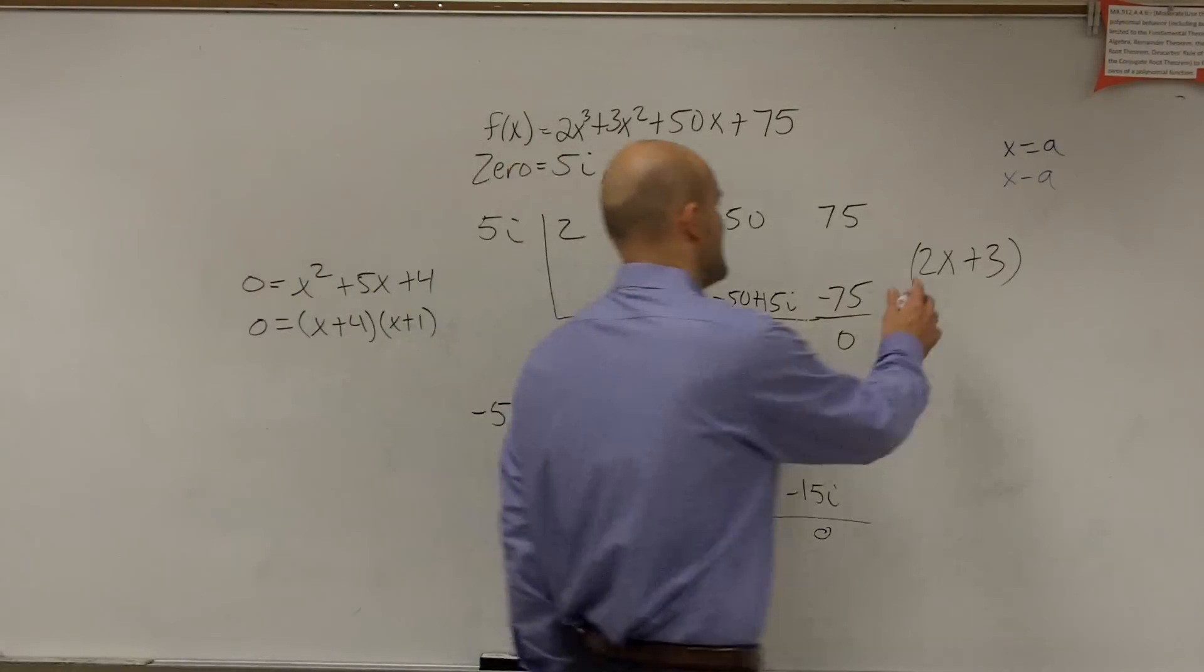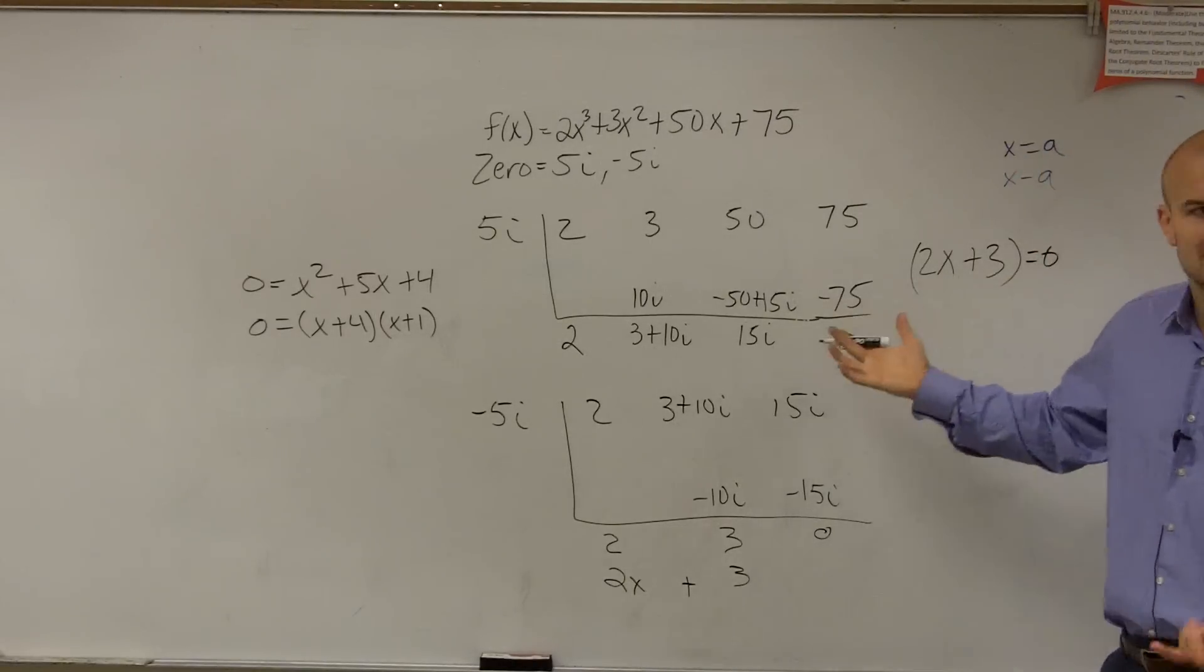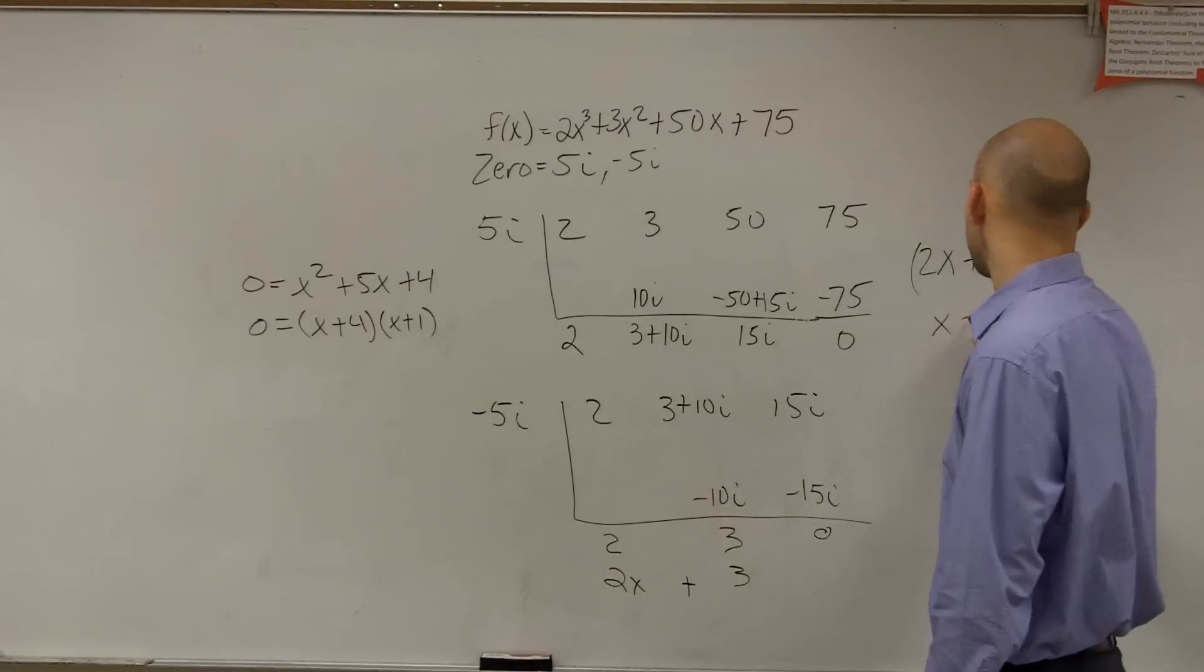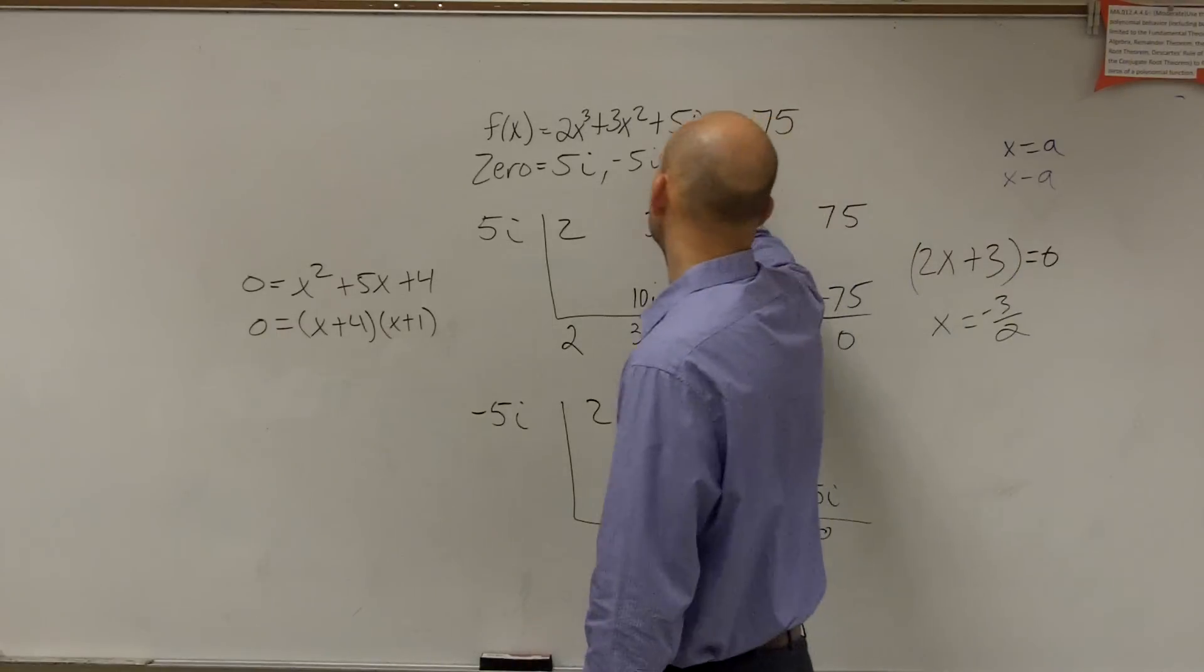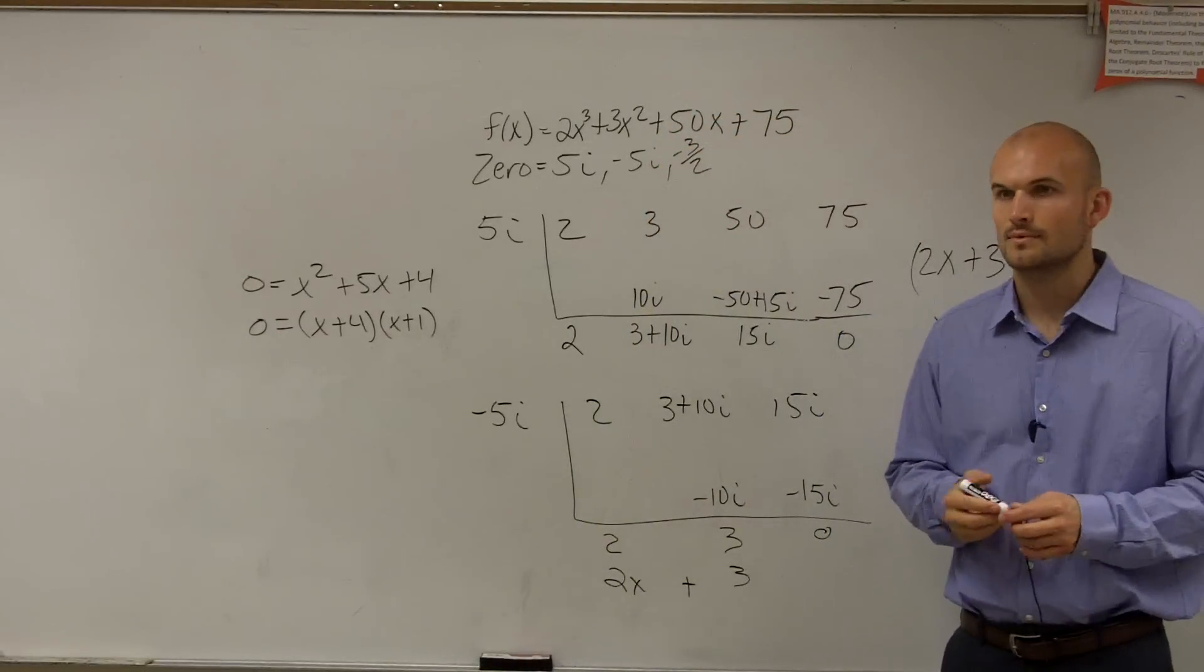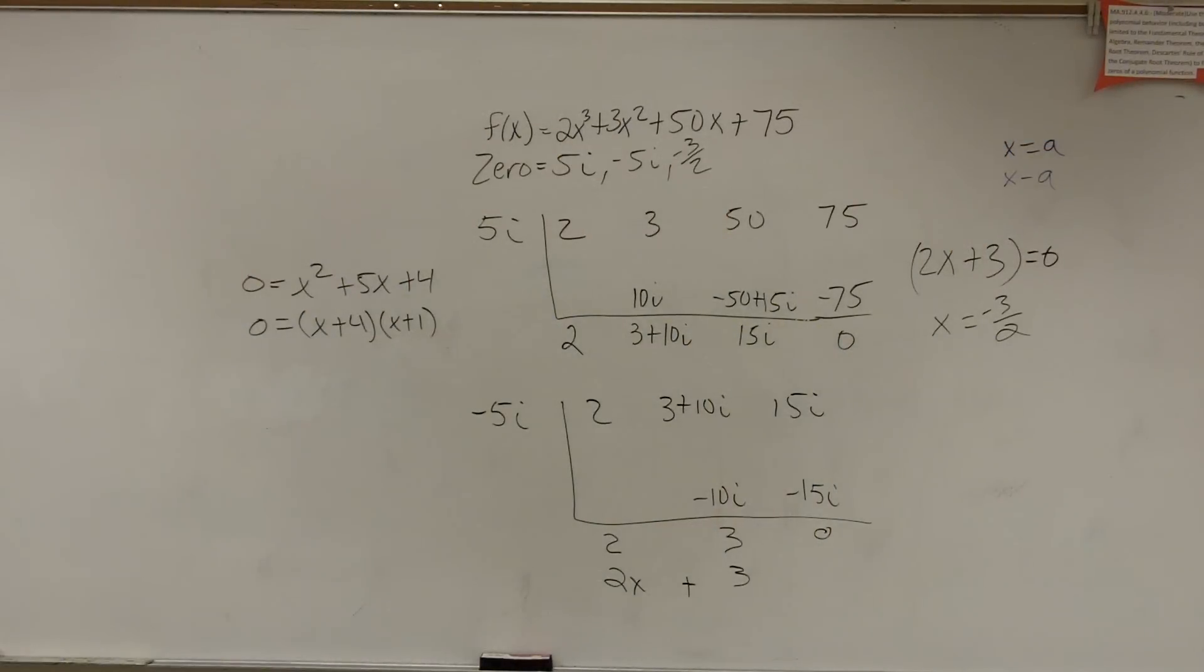So if this is a factor, to find the zero, I set it equal to 0. Because remember, it's a factor. So by using the 0 product property, you set it equal to 0. So x equals negative 3 halves. So your last zero is negative 3 over 2. Okay? That's it? That's good. Wham, bam, thank you, ma'am. All right.